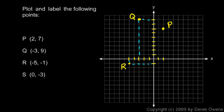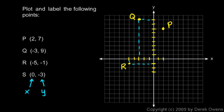And then point S is the point 0, negative 3. That 0 is my x and negative 3 is y. When the x is 0, we don't move left or right at all — we only move 3 in the y direction. So we come down 1, 2, 3 to this point right here. That is point S. So there's points P, Q, R, and S plotted in the coordinate plane.